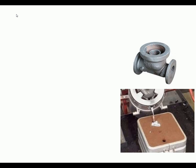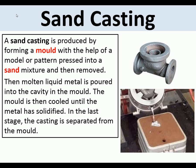The first thing we're going to look at is sand casting. A sand casting is produced by forming a mold with the help of a model or pattern, often made of wood. This is pressed into a sand mixture and removed, leaving a cavity. The molten liquid metal, in this case aluminium, is poured into the mold, and when it cools, the metal solidifies and the casting is separated from the mold.